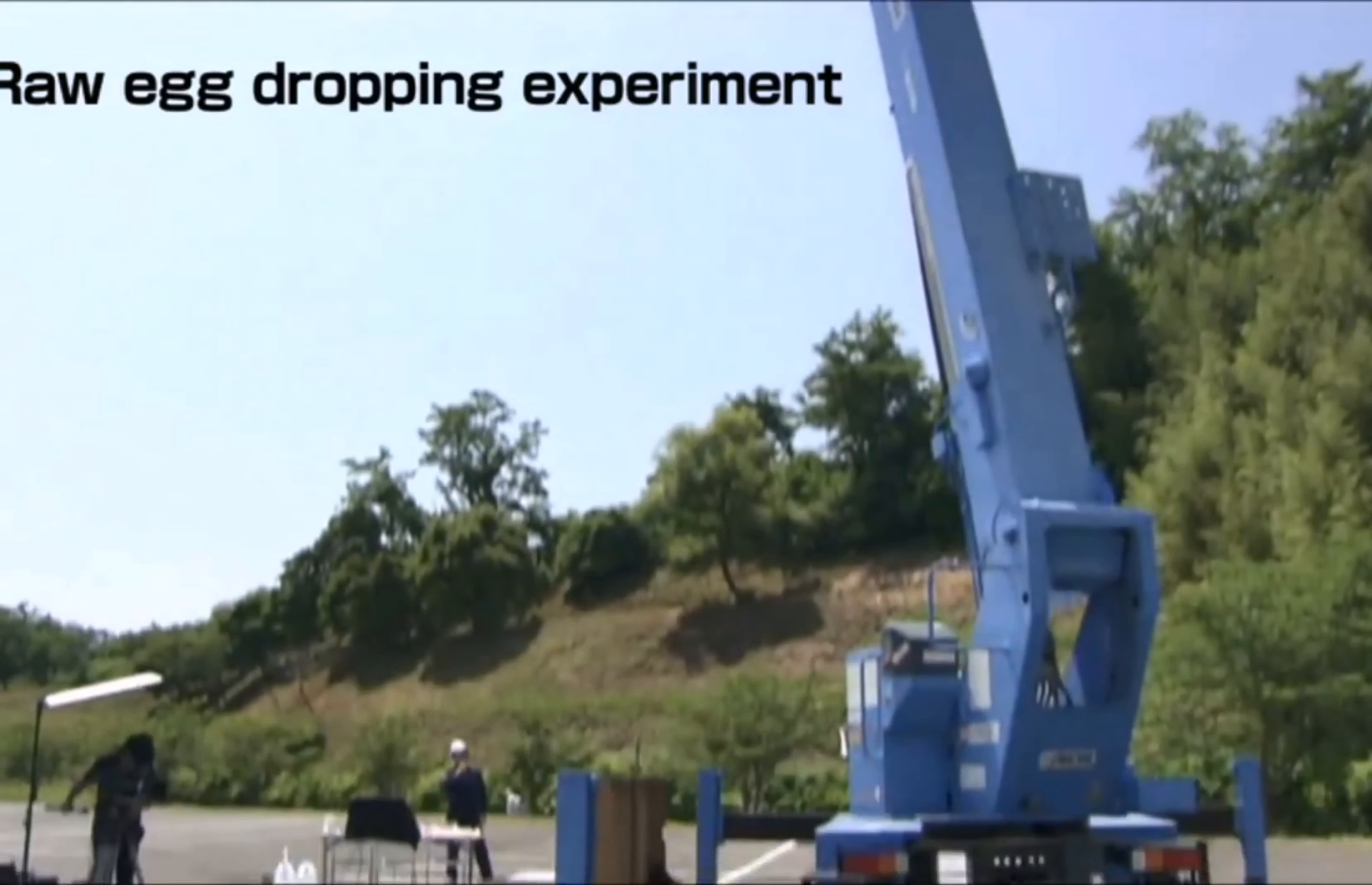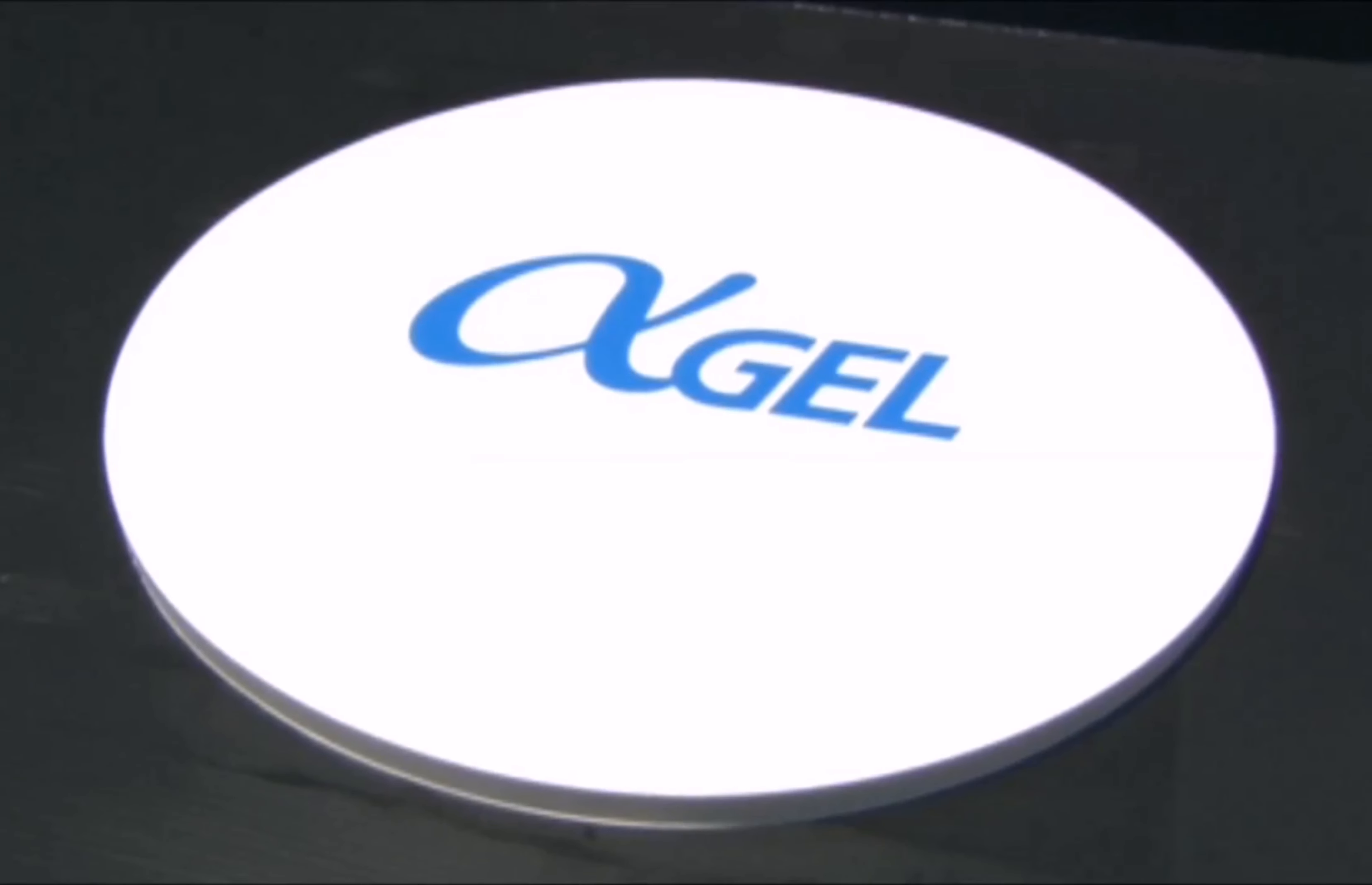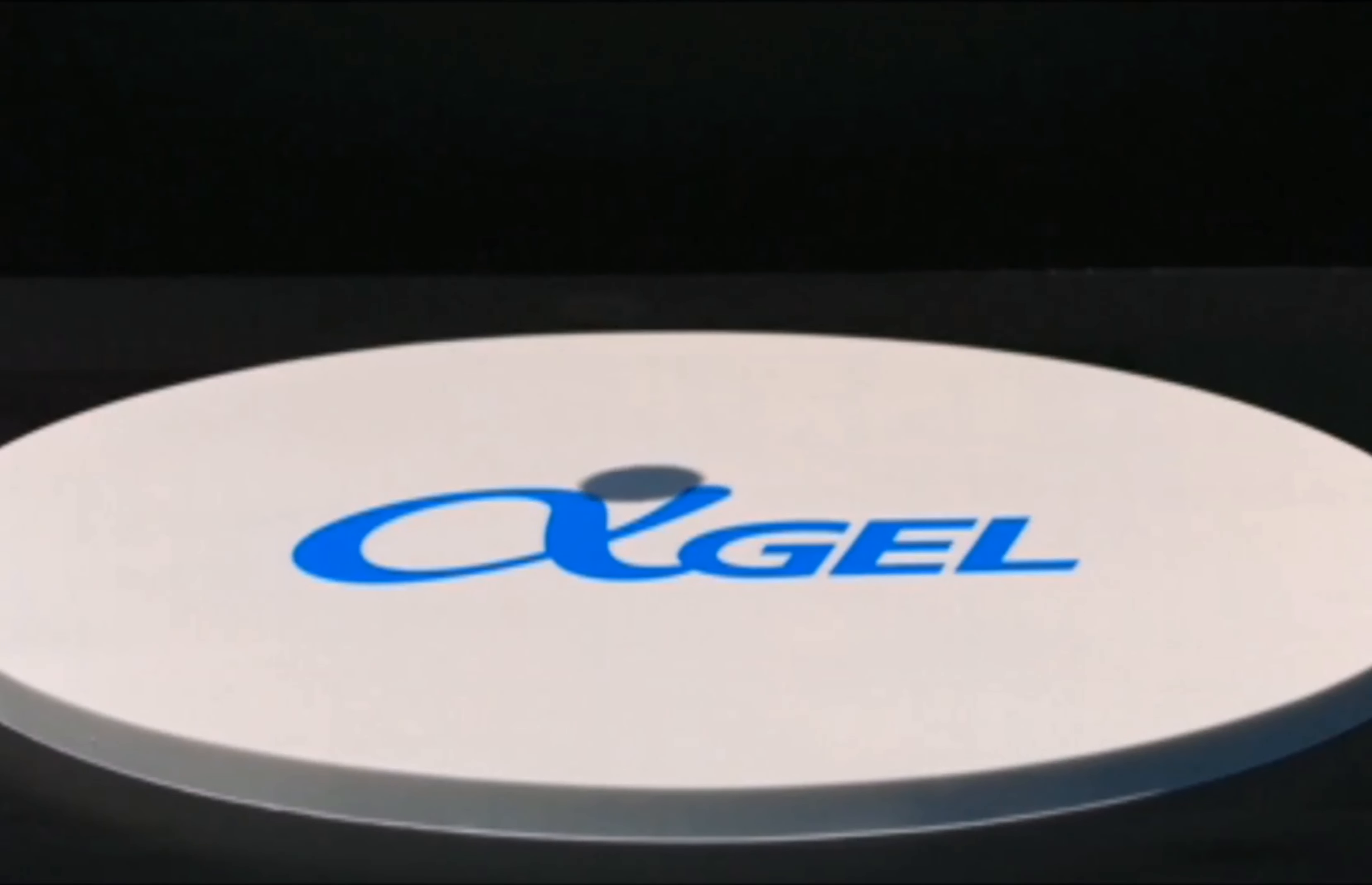Let's take a look at the astounding performance of AlphaGel. A mere 2 cm thick AlphaGel sheet is placed on the ground and a raw egg is dropped onto it from a height of 18 meters, a height that is about the equivalent to the sixth floor of a building.